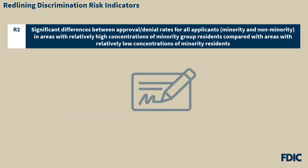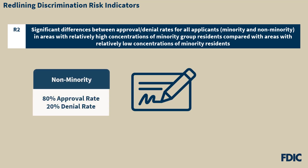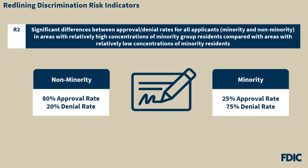The next risk indicator, R2, relates to significant differences between approval or denial rates for all applicants, whether they are minority or non-minority, in areas with relatively high concentrations of minority group residents, compared with areas with relatively low concentrations of minority residents. For example, there could be a risk if the approval rate of all applications from non-minority areas was 80%, while 75% of all applications from minority areas were being denied. In such a case, further review may be warranted.